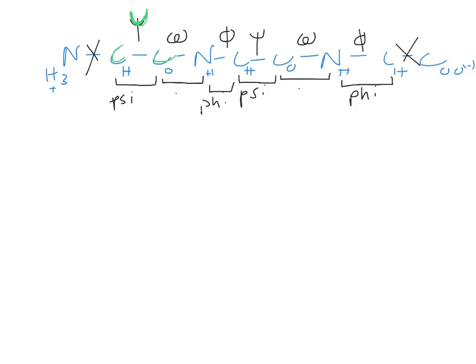The way I remember psi is that if you look carefully, there is a C on its side right inside of the trident, representing the alpha carbon and the carbonyl carbon. Psi is the only one that connects those two carbons, which leaves only one unique bond type left — the nitrogen to the alpha carbon — and that one is phi. P-H-I. Along the backbone, we only have three unique bond types: phi, psi, and omega.